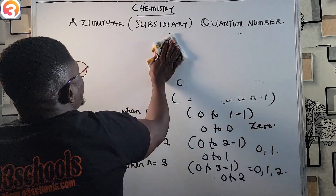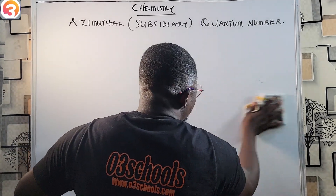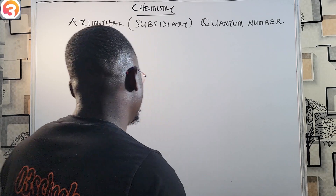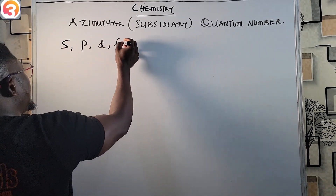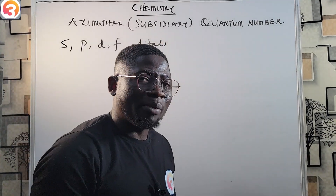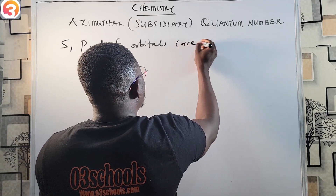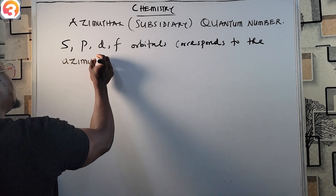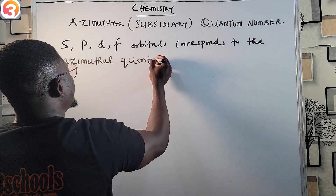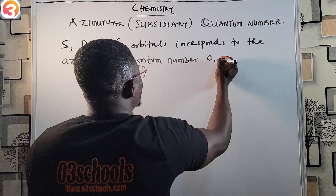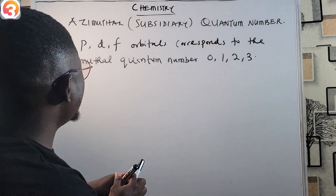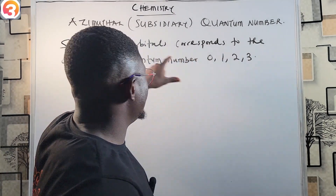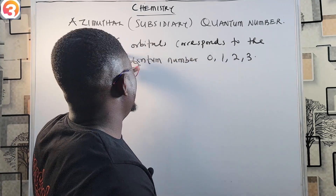Now for the most important part: the s, p, d, f orbitals correspond to the azimuthal quantum numbers zero, one, two, and three respectively. That means s corresponds to l=0, p to l=1, d to l=2, and f to l=3.